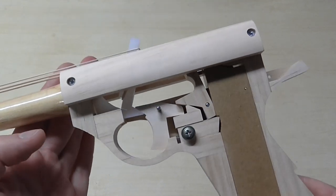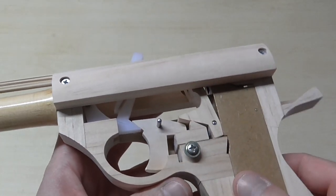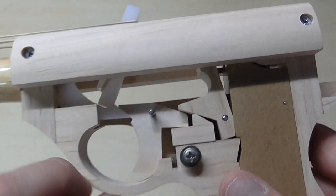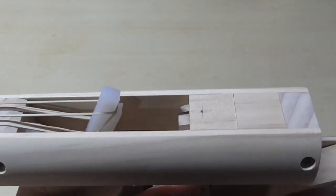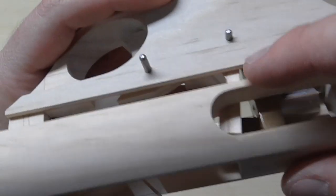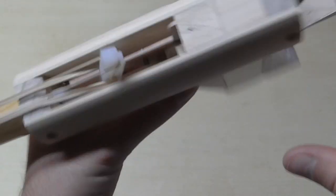This is where the Mark 5 comes in. These internal parts are slightly different. The main difference is that the trigger now acts on this part here, which as you remember is that part that pushes the shells out.